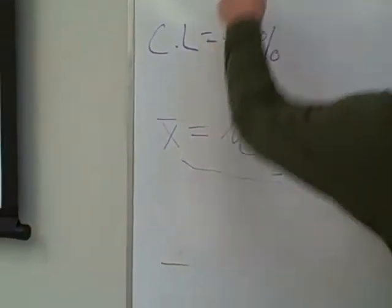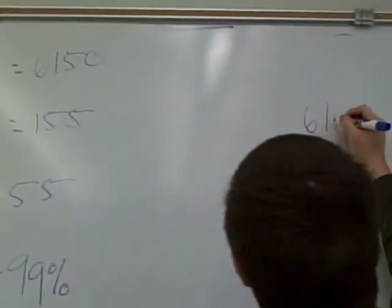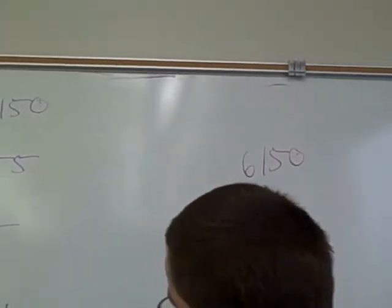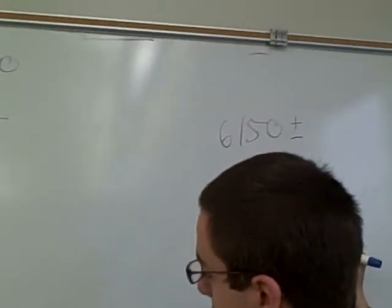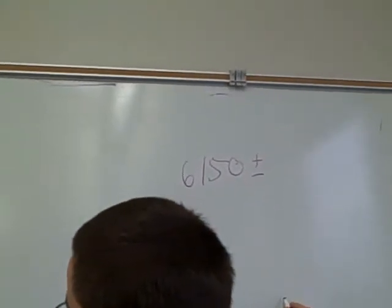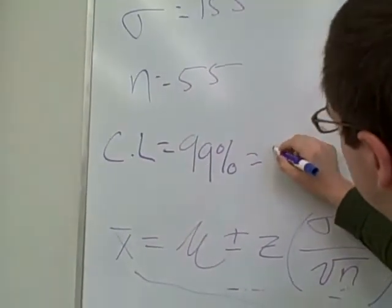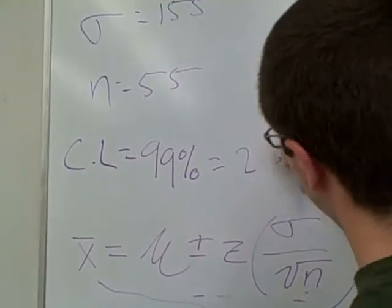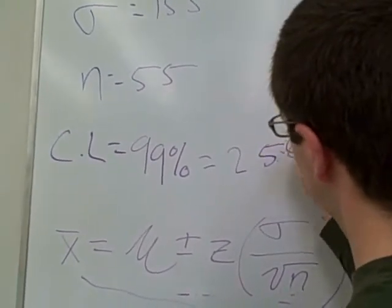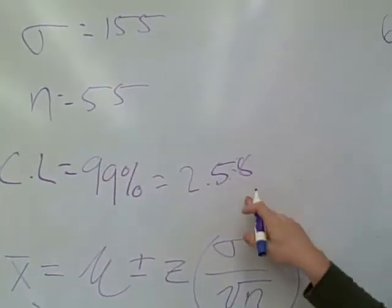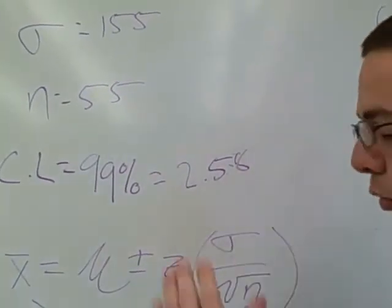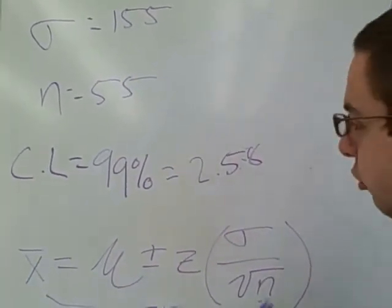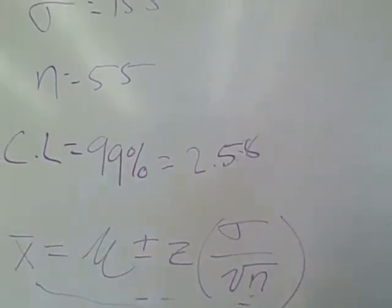We know where our mu is. Our mu is 6,150. So we're going to do plus or minus. Our z score is 99% equaling to be 2.85. No, my fault, it's 2.58. You see in the vector z scale that it's between 2.57 and 2.58, so you jump to 2.58 to make sure you get everybody.